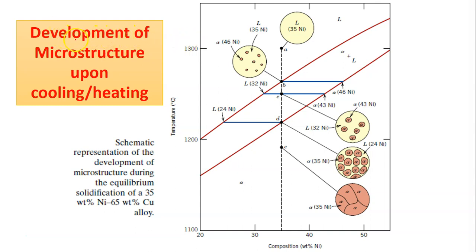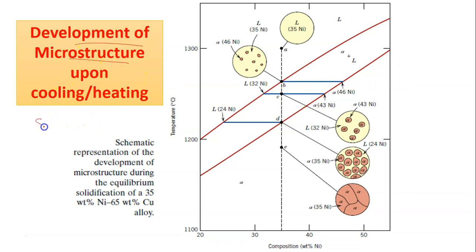We're going to move on with development of microstructure upon cooling and heating processes of certain alloys. We're going to take a look at this isomorphous binary alloy, which is composed of, for example, the copper-nickel system. Imagine the solidification process of this alloy at 35 weight percent of nickel.